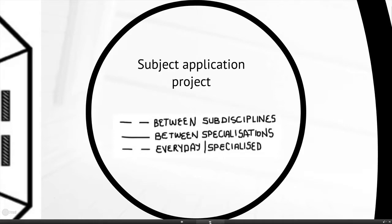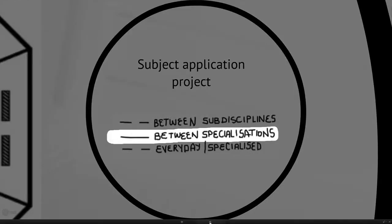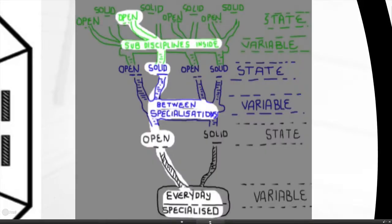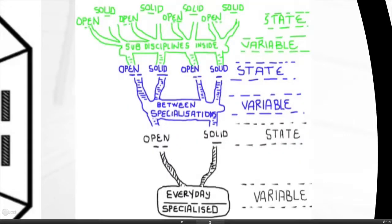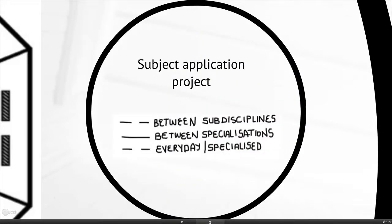In the third option we're working with a situation where you tighten the line between specializations but keep everything else open. Now it becomes a stranger space to think about, because you've kept the specialization separated from other specializations, but you're allowing integration both at the level of sub-disciplines and at the level of the everyday-specialized. For example, you take Natural Science, keep it separated from other subjects, but then ask students to use the subject to understand the everyday world — and you do it in such a way that you're not asking them to discriminate between the different sub-disciplines actually involved.